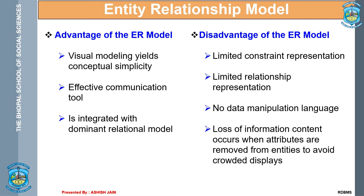Also, limited relationship representation is there — you cannot represent all the relationships that exist among various entities, especially if you have a large number of entities. There is no data manipulation language in ER modeling since it is just a diagrammatic representation; there is no way to process data using this model. Additionally, loss of information content occurs when attributes are removed from entities to avoid crowded displays. If you have a 15-column table and represent it as an ER diagram, you may have to omit certain attributes, which might lead to loss of information.